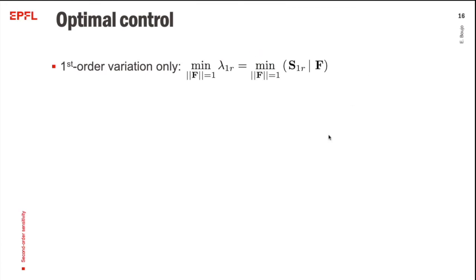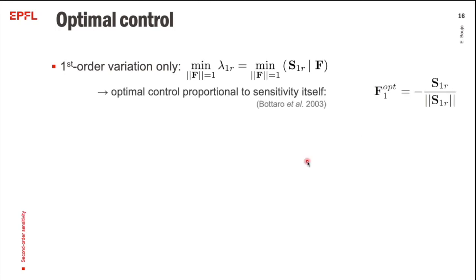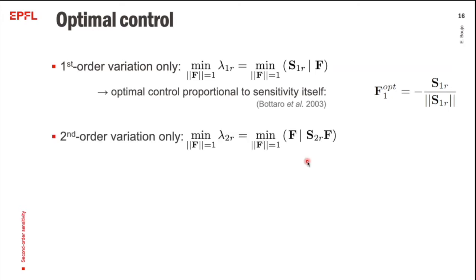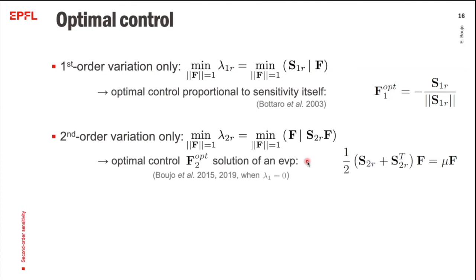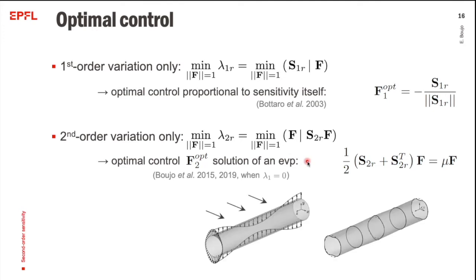Finally, I would like to talk about optimal control. Considering only the first-order variation, the question is: what is the best shape for the control to get the largest stabilizing effect? One can show that the optimal control is proportional to the sensitivity itself. Conversely, considering only the second-order variation, the optimal control is a solution of an eigenvalue problem. This is relevant when λ1 = 0 — for instance, when you have a nominally two-dimensional flow controlled with a three-dimensional periodic control in the invariant direction of the flow, so that by averaging effects λ1 is exactly zero.